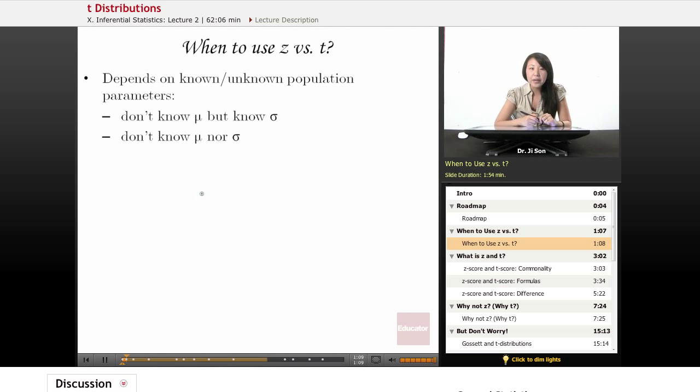First off, when do we use Z versus T? We covered it in previous sections where we looked at whether we knew the population parameters or not. In hypothesis testing, we frequently don't know the mu of the population. But sometimes we are given sigma. And in this case, we use Z in order to figure out how many standard errors away from the mean we are in our SDOM.